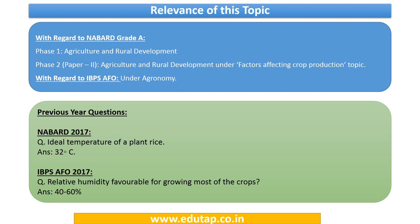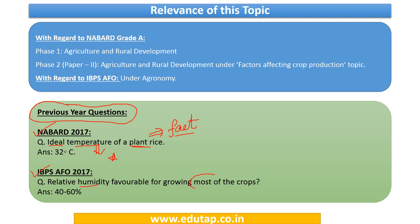It is very important for us to know the previous year questions, as they help us build orientation towards approaching a topic. In NABARD 2017, there was a question asking the ideal temperature for rice — a fact-based question with no complex concept involved. In IBPS AFO 2017, there was a question on relative humidity favorable for growing most crops; the answer was 40 to 60 percent. So our approach will be to identify important facts under each factor affecting crop production.